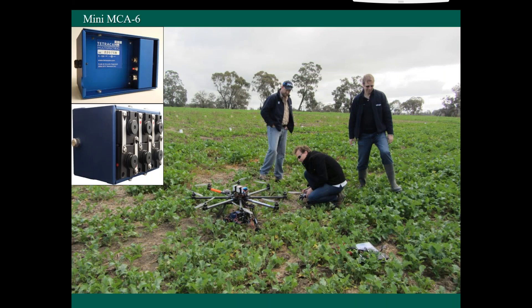So I used a mini MCA-6. You can see there's basically six cameras there. You can take them out and add other sensors if you want. So there's a bit of flexibility there. And Matt here from Sensorim was a CASA certified pilot. So he flew this one, this octocopter.